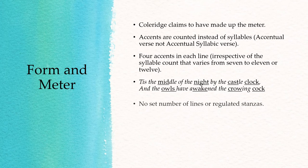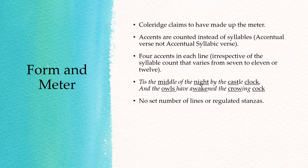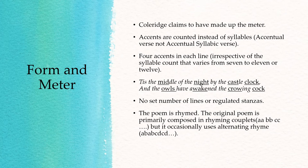This poem does not have a set number of lines or regulated stanzas. Each stanza has its own pattern and length. The poem is rhymed and primarily composed in rhyming couplets: A-B-B-C-C and so on. But occasionally it uses alternating rhyme where alternately lines rhyme: A-B-A-B-C-D-C-D. Most of the poem is written in rhyming couplets but at many occasions the writer uses alternating rhyme.